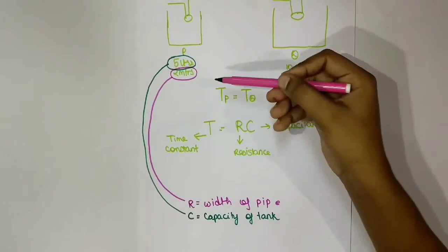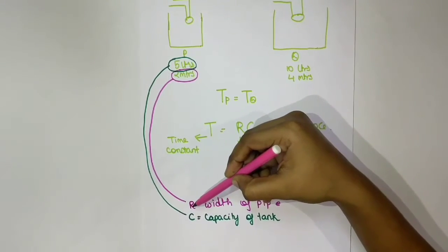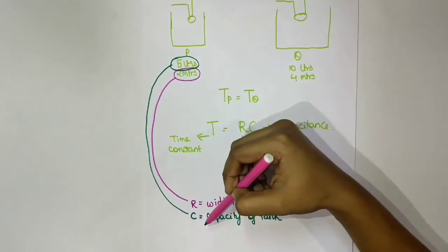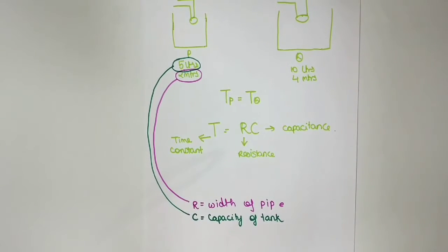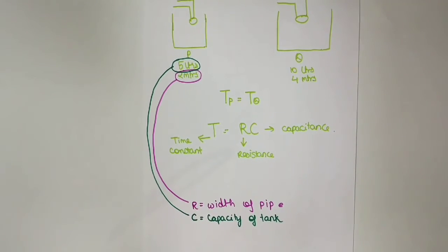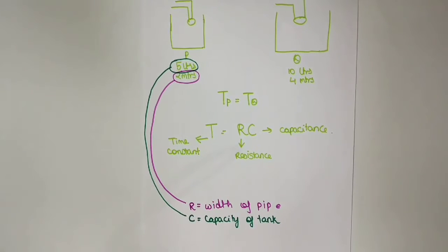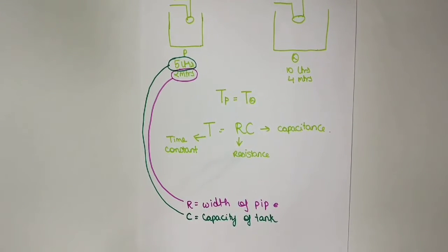As compared to the tank example, R can be related to the width of the pipe whereas C can be related to the capacity of the tank. So capacitor P and capacitor Q will have the same time constant, that is same time to charge and discharge.